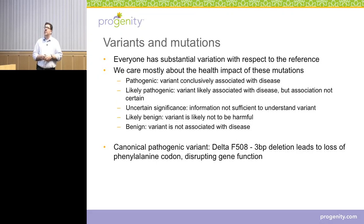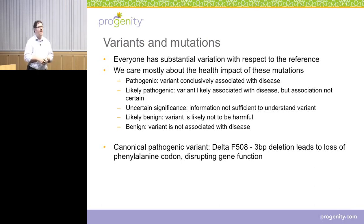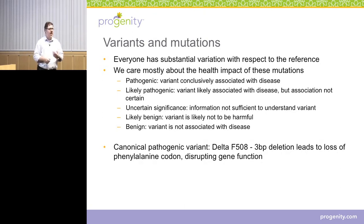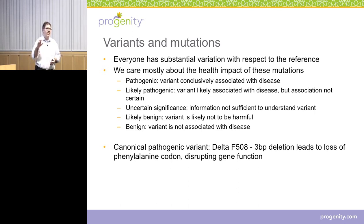I want to mention one thing about variants. Everybody has a lot of variations, and in this context we really care mostly about the health impact. The field is moving towards a classification system where a variant might be called pathogenic — conclusively associated with disease — or likely pathogenic, where there's literature evidence but it's not conclusive. Uncertain significance will be most of the variants you find; there's not a lot of information either way and in silico tools are difficult to trust. Variants might be likely benign — probably not associated with disease — or benign, clearly not associated with disease. One easy way to know a variant is benign is if it has very high prevalence in the population: for example, if your disease occurs at 1 in 50,000 but your variant is present in 25% of individuals, it's almost certainly not associated with that specific disease.